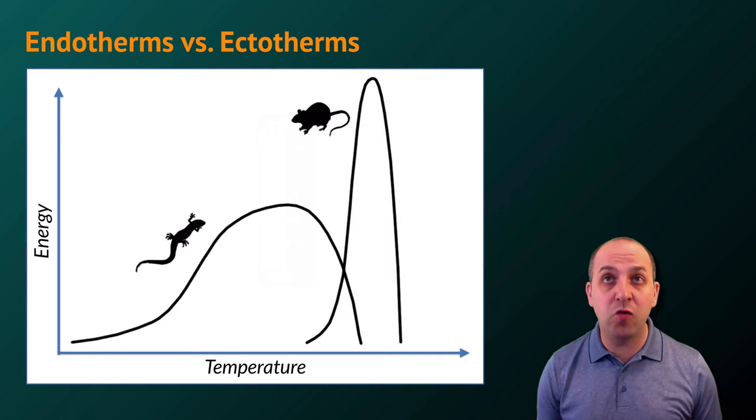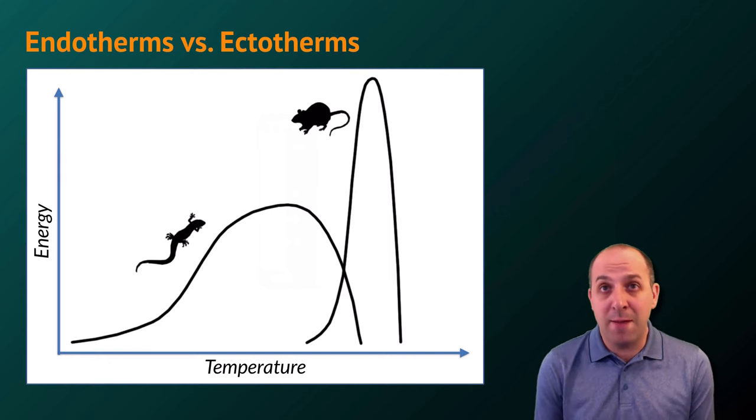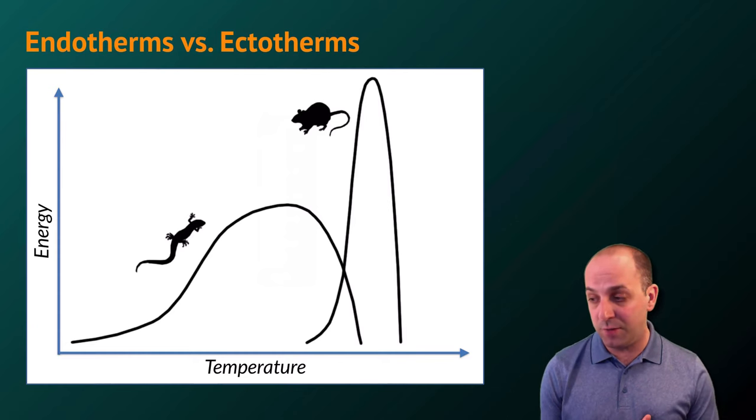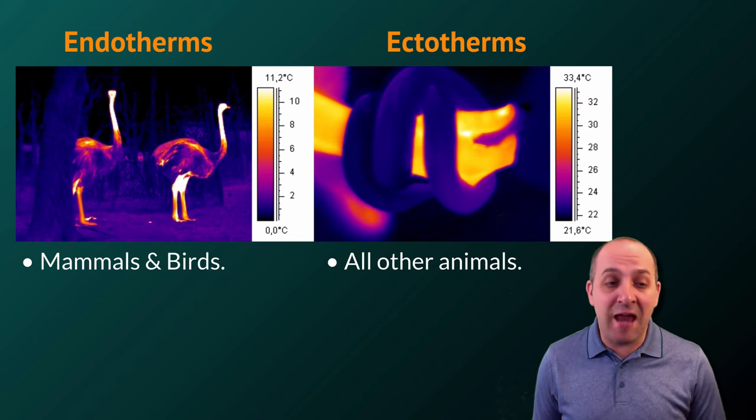And of course, we know this as humans because we know how dangerous conditions like hypothermia, getting too cold, or hyperthermia, like a very high fever, can be for our internal physiology. Endotherms and ectotherms represent two different strategies that have benefits and consequences.